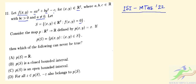Now we have a map p which maps from R² to R, defined by p(x, y) = x. We are given that p(S) is the set of p(x, y) where (x, y) belongs to S. We need to determine which of the following options can never be true.